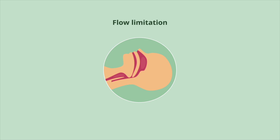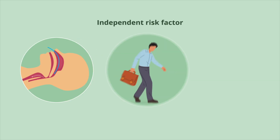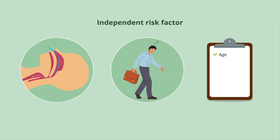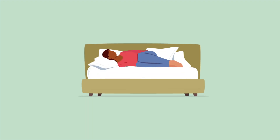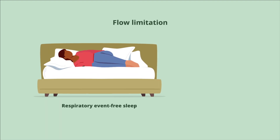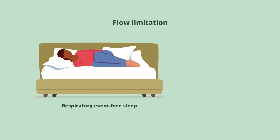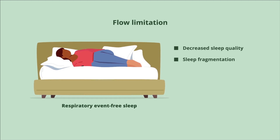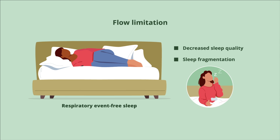Flow limitation was found to be a significant and independent risk factor for sleepiness in individuals with low AHI, less than 15 per hour, or those without moderate or severe OSA. This association held true when accounting for age, sex, BMI, race or ethnicity, and average sleep duration. This study contributes evidence to the perspective that flow limitation, even during respiratory event free sleep, may contribute to decreased sleep quality and sleep fragmentation, resulting in daytime sleepiness.